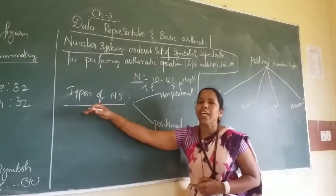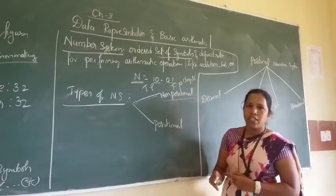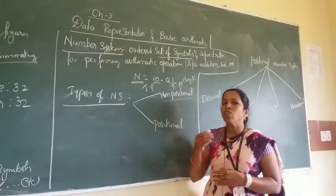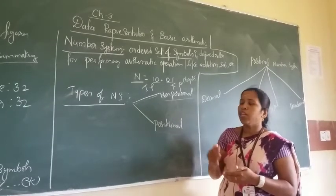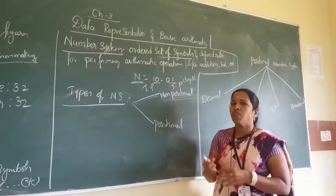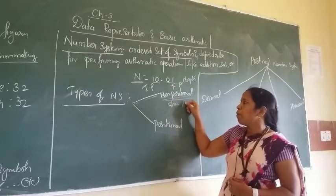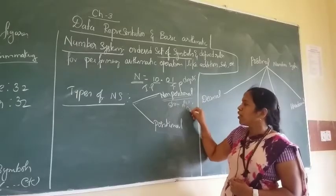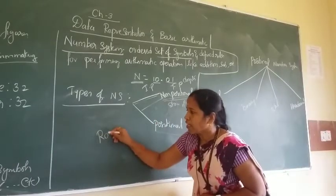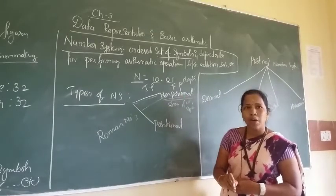Coming to the types of number system, we have two types: non-positional number system and positional number system. In the non-positional number system, in olden days we used to use symbols like stones and pebbles to count larger numbers when fingers were not sufficient. The best example is Roman numerals, which come under the non-positional number system.